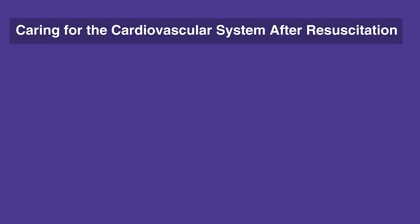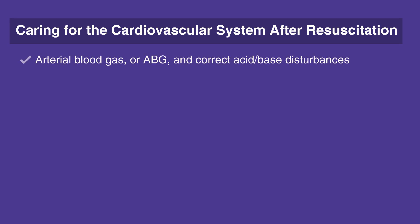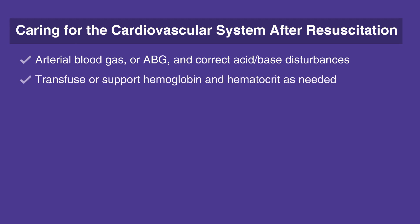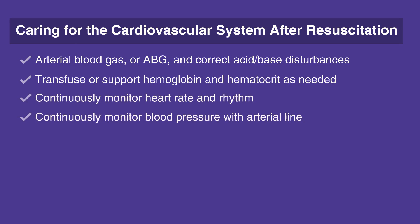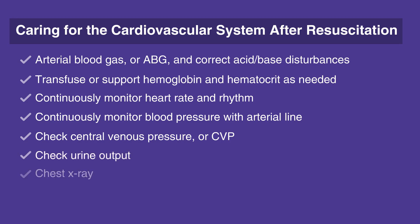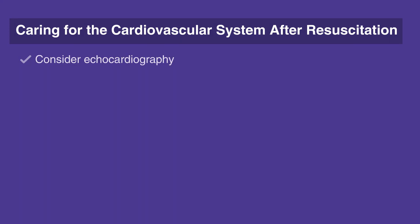When caring for the cardiovascular system after resuscitation, follow this checklist. Arterial blood gas, or ABG, and correct acid-base disturbances. Transfuse or support hemoglobin and hematocrit as needed. Continuously monitor heart rate and rhythm. Continuously monitor blood pressure with arterial line. Check central venous pressure, or CVP. Check urine output. Chest x-ray. 12-lead ECG. Consider echocardiography.